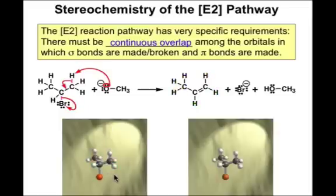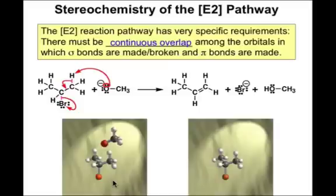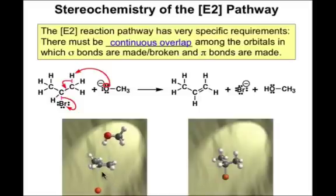Watch for the smooth rehybridization that takes place in these sp3 carbons as they transform into a pi bond. Here it goes again: the base is coming in, we're at the transition state, the leaving group is leaving, and the geometry changes to the double bond that's flattened out.